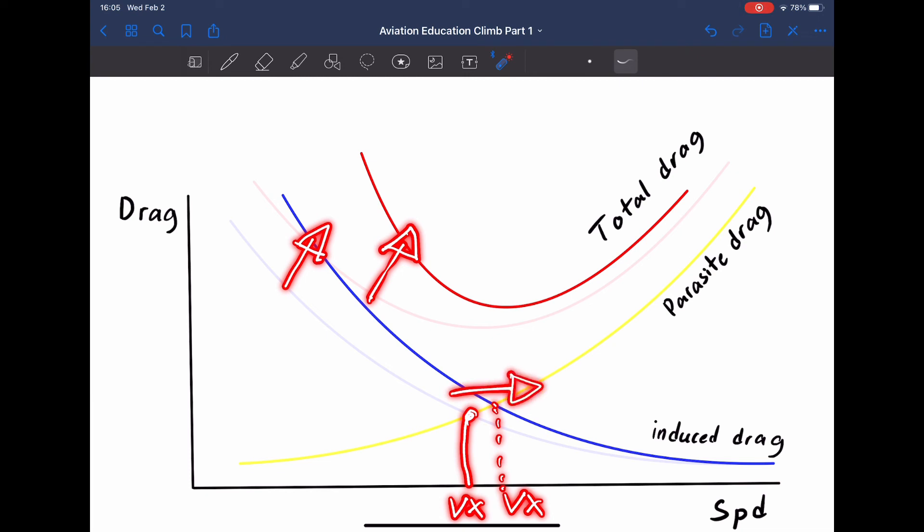So, increasing the weight, or increasing the induced drag, they mean the same thing for this example, increases your VX speed. Your VX speeds are not constant.